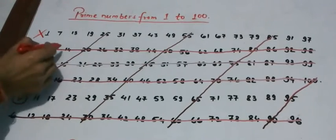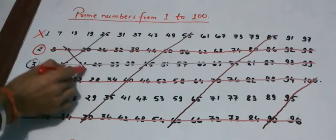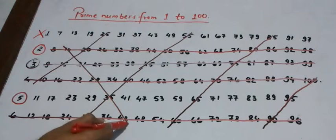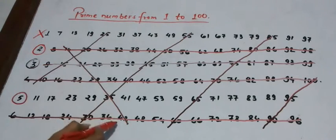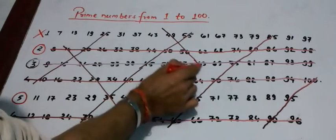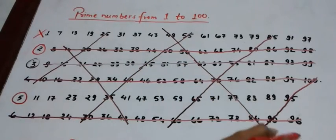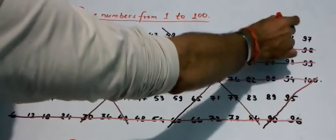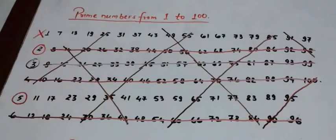And at the last step, we cancel out all the multiples of 7. That is 14 to 42, 49 to 84 and 91 and 98.